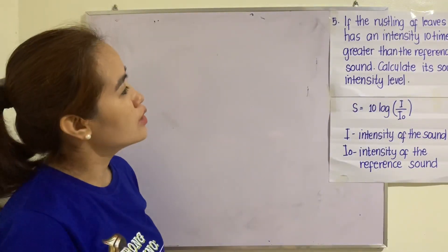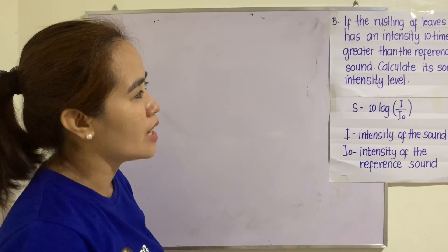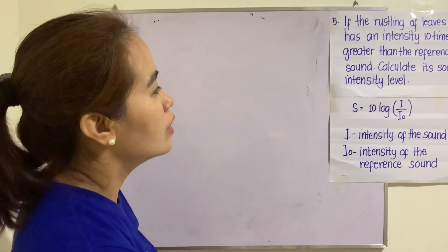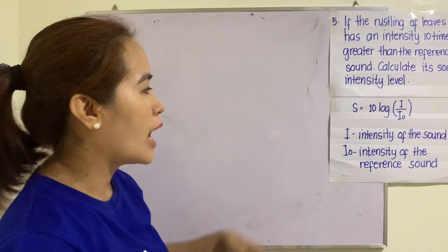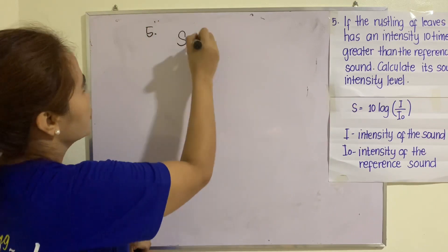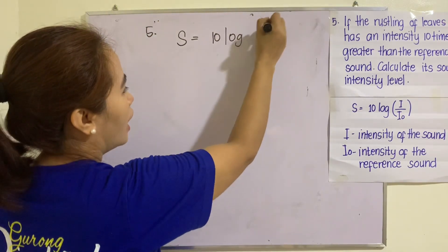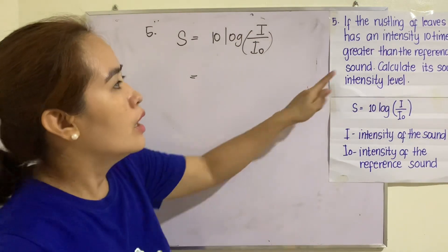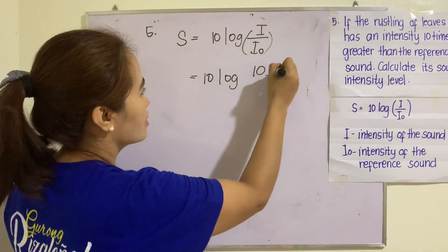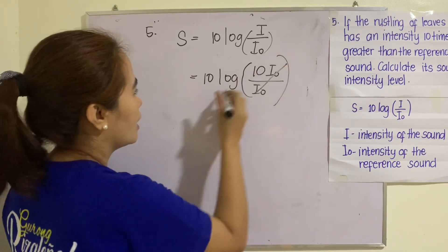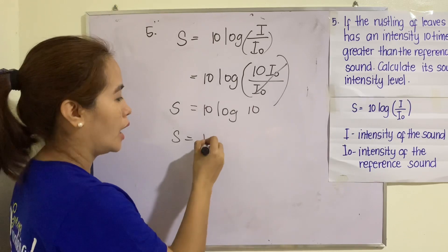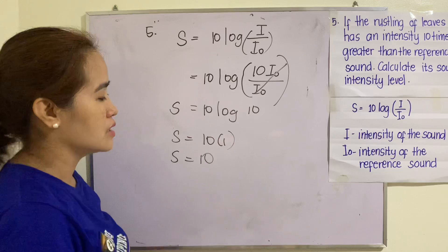Example number 5. If the rustling of leaves has an intensity 10 times greater than the reference sound, calculate its sound intensity level. The formula is S equals 10 log of (i over i sub-zero), where i is the sound intensity and i sub-zero is the reference intensity. Since i equals 10 times i sub-zero, i sub-zero cancels, giving S equals 10 log of 10. Since log 10 equals 1, S equals 10 decibels.